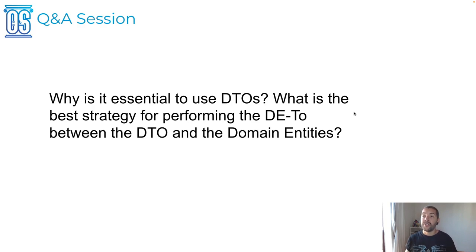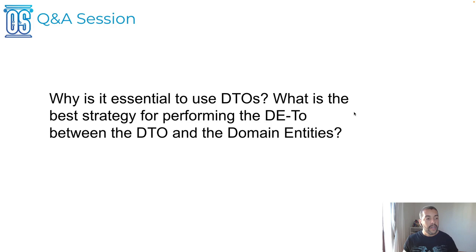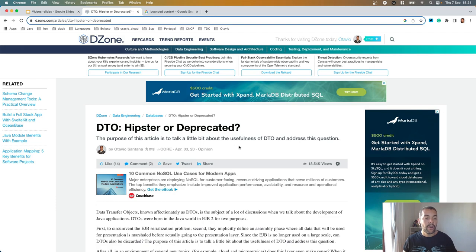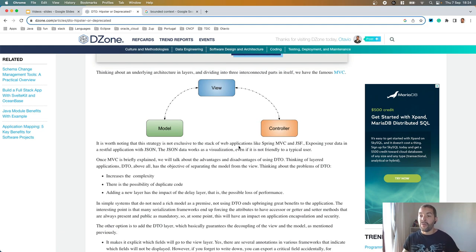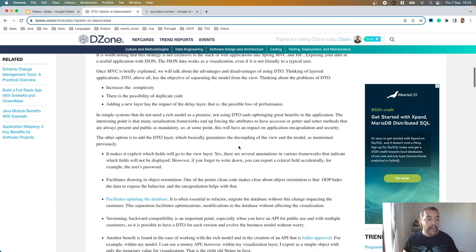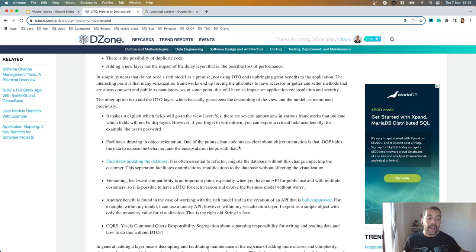Another point is versioning. Imagine that I have version 1, version 2, and version 3 of a DTO, and I don't want to impact my entity or my domain with these changes. So with DTO I can make it possible. The best strategy to perform the conversion between DTO and domain entity is using a framework such as MapStruct. I wrote an article on DTO — hipster or deprecated — that will cover more details on that. So in this case, I used both REST API and JSF, but you can use it with JAR, gRPC, and any integration that needs to move some information outside your domain.